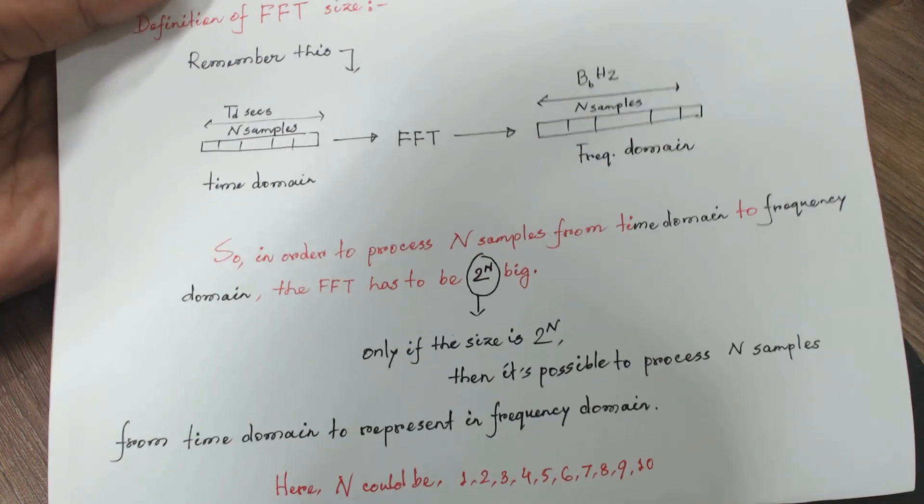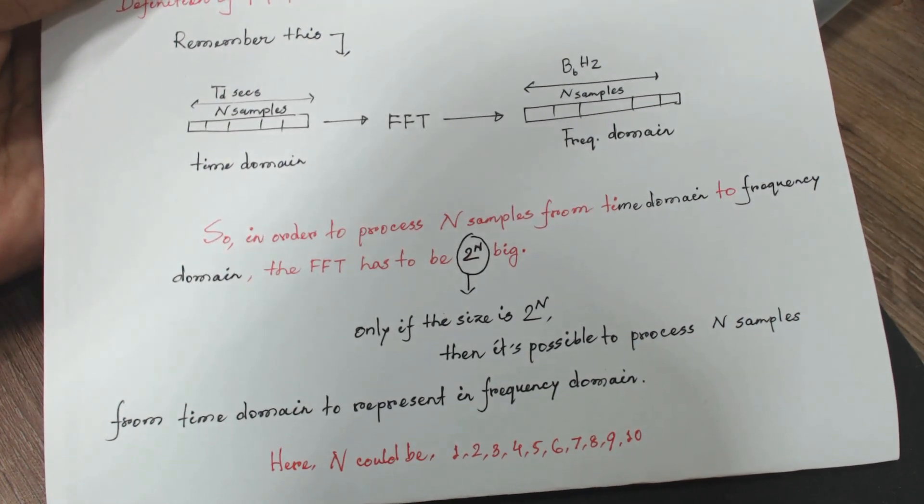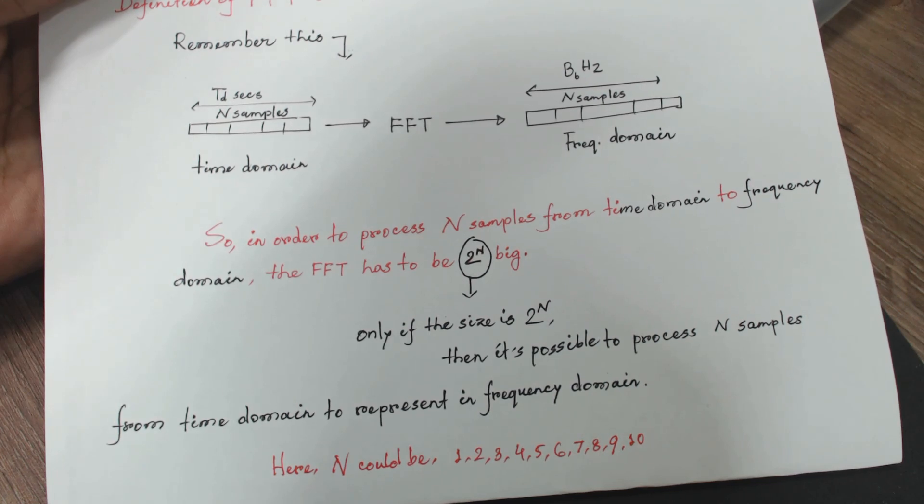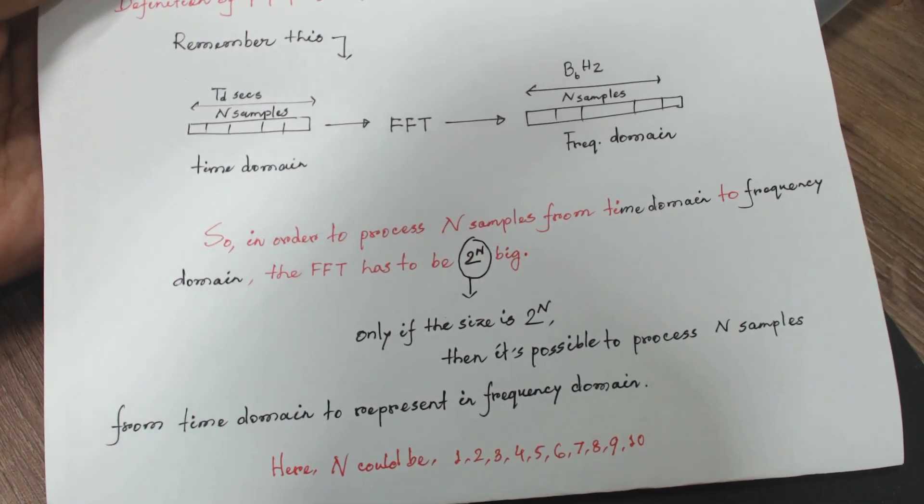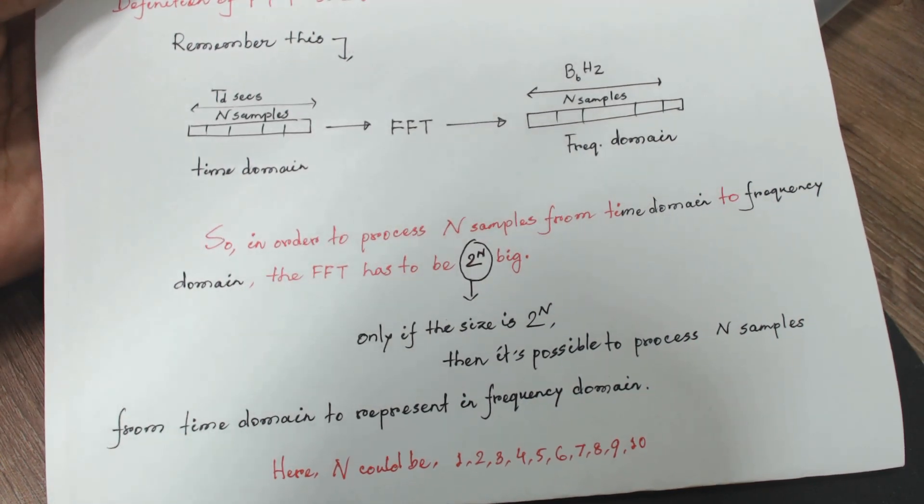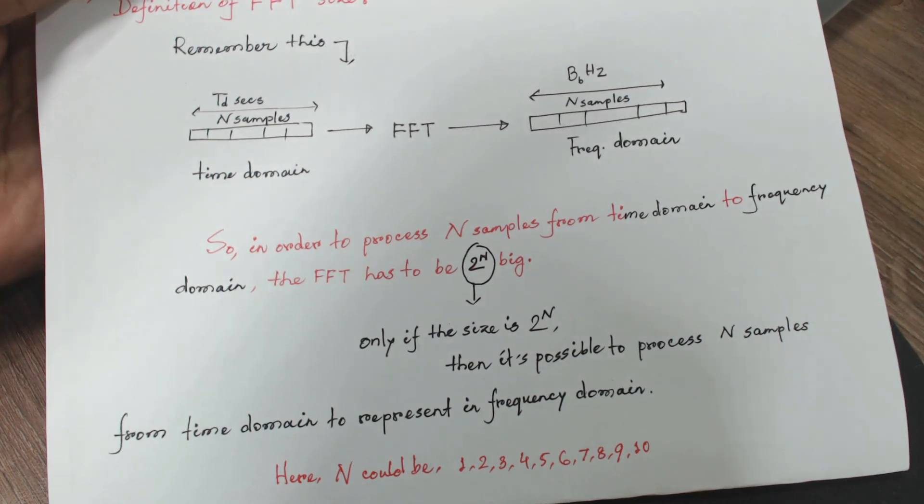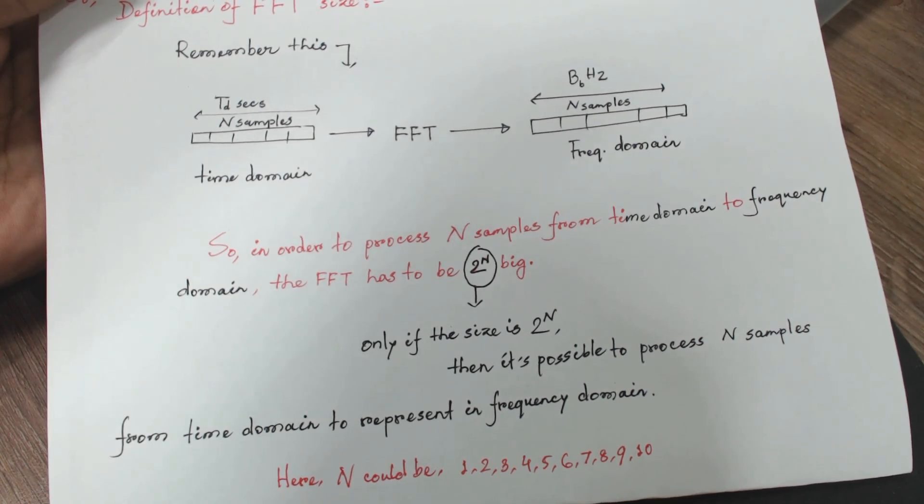Only if the size is 2 to the power N then it's possible to process N amount of samples from time domain to represent that in frequency domain. And that N could be actually any number, like just positive numbers, like 1, 2, 3, 4, 5, 6.